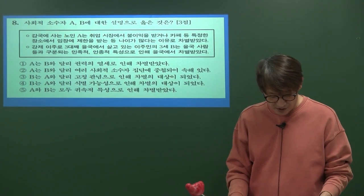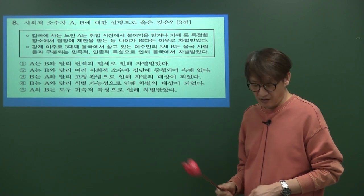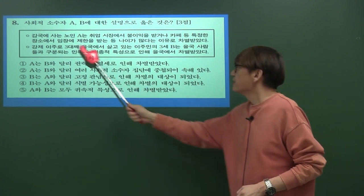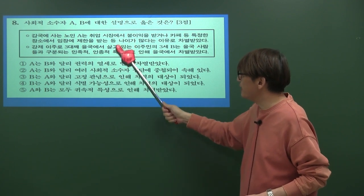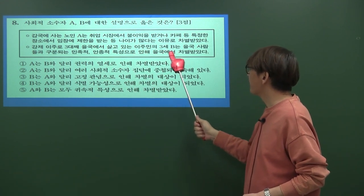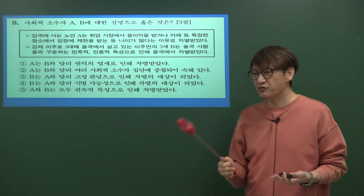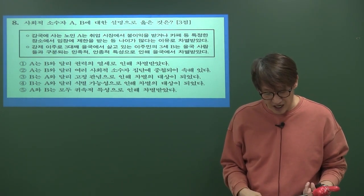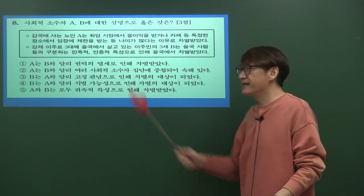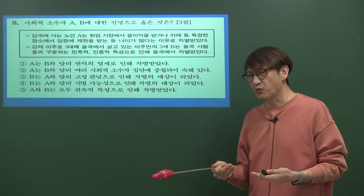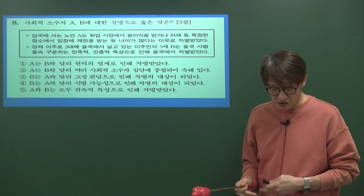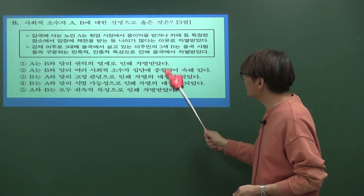8번 문제는 3점으로, 사회적 소수자 A와 B에 대한 설명 중 옳은 것을 고르는 문제입니다. A는 노인이고 B는 이주민 3세입니다. A는 나이를 먹고 싶어서 노인이 된 것이 아니라 세월이 지나면서 된 것이므로 귀속적 특성이 있고, B는 민족적·인종적 귀속적 특성에 의해 차별받고 있습니다.